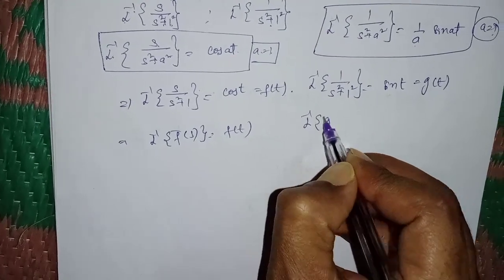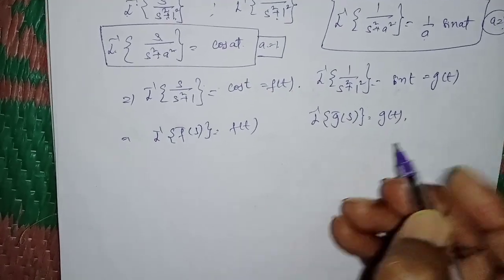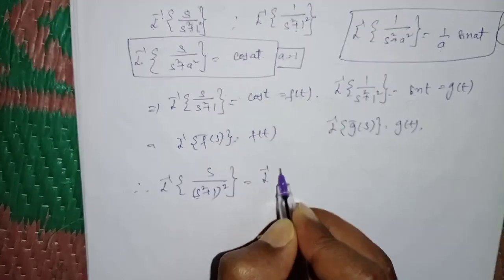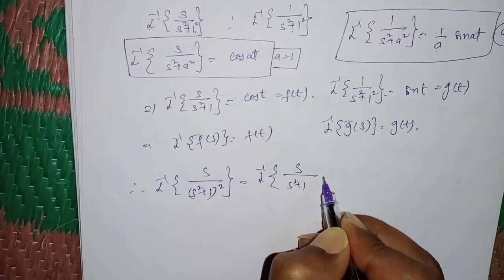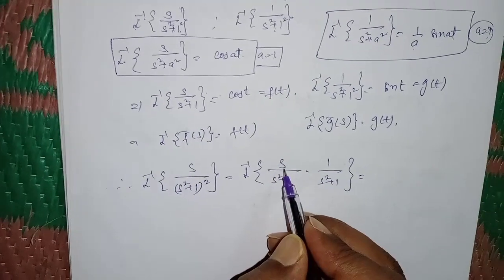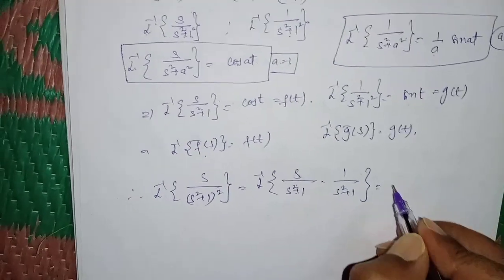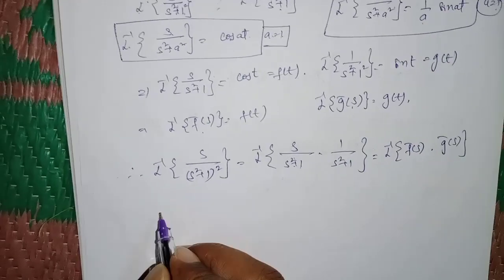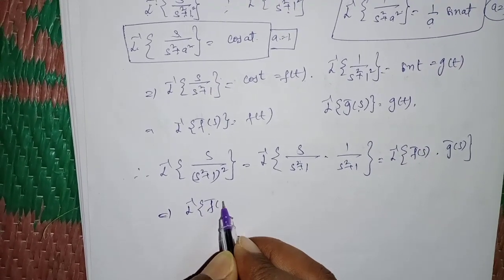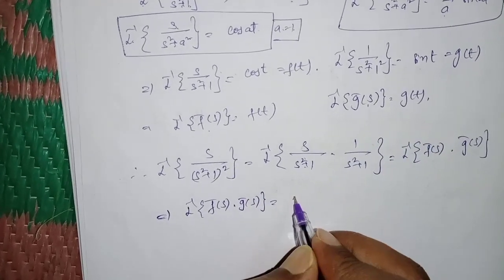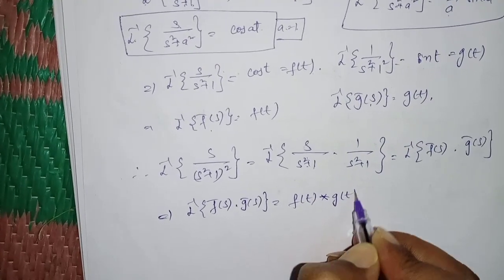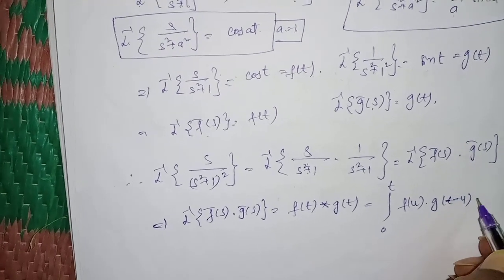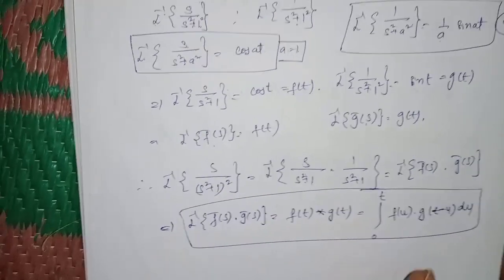So L⁻¹ of F̄(s) = f(t) and L⁻¹ of Ḡ(s) = g(t). Substituting into the convolution formula: L⁻¹ of F̄(s)·Ḡ(s) = f(t) * g(t) = integral from 0 to t of f(u)·g(t−u) du. This is the convolution formula.